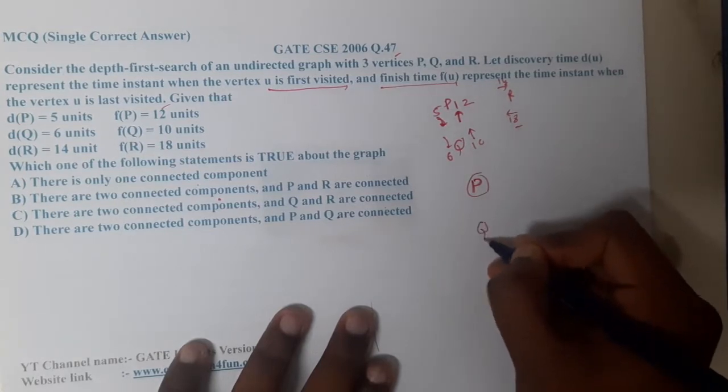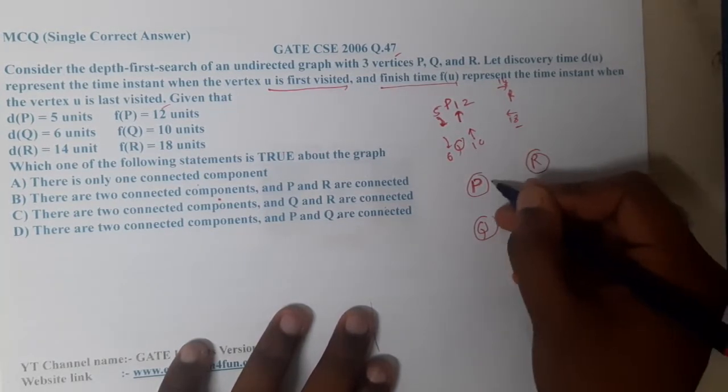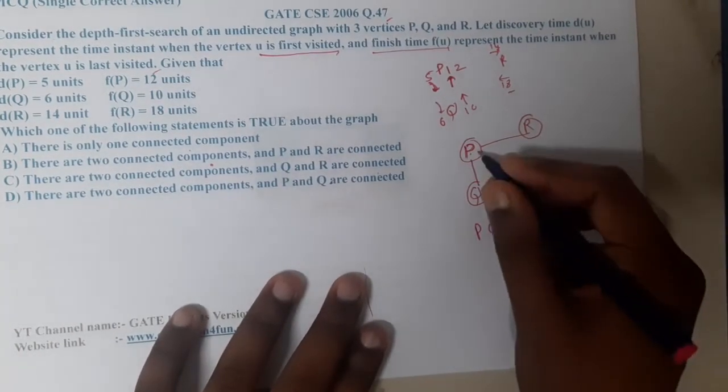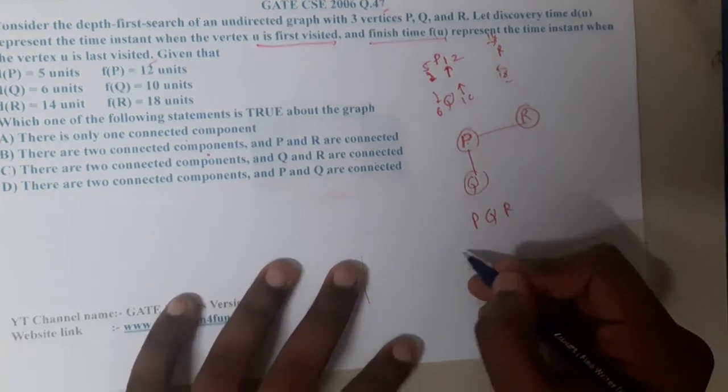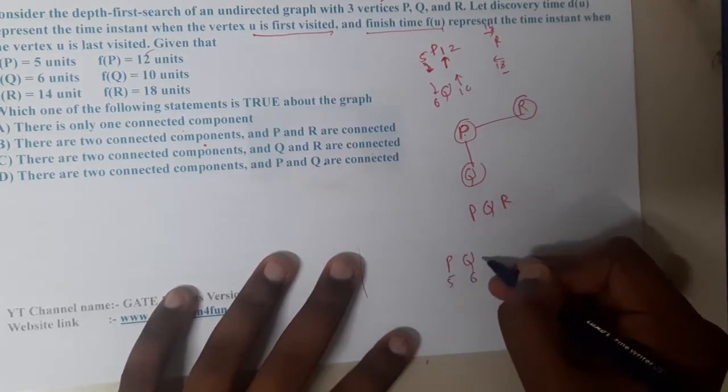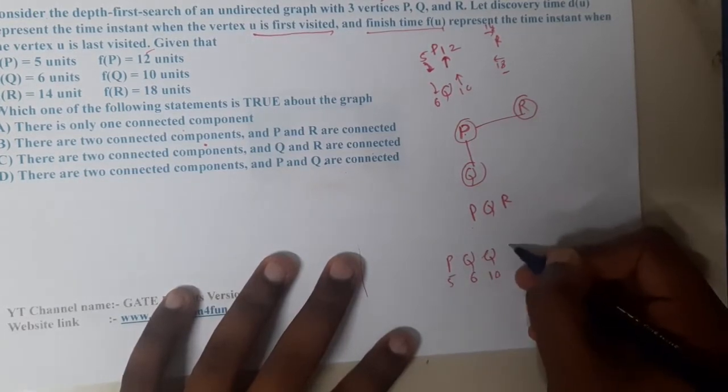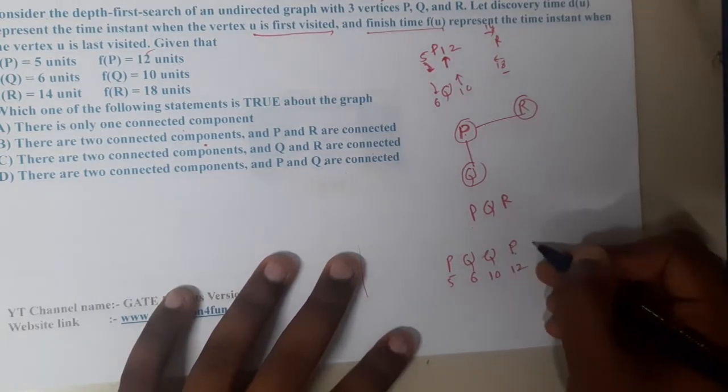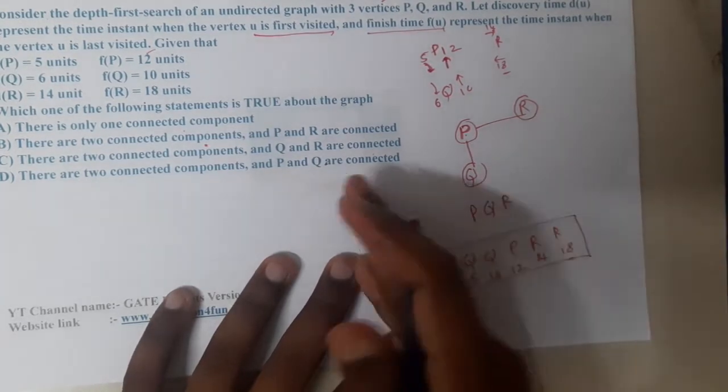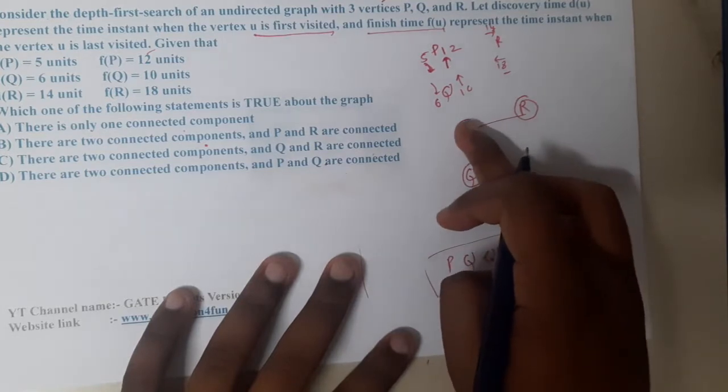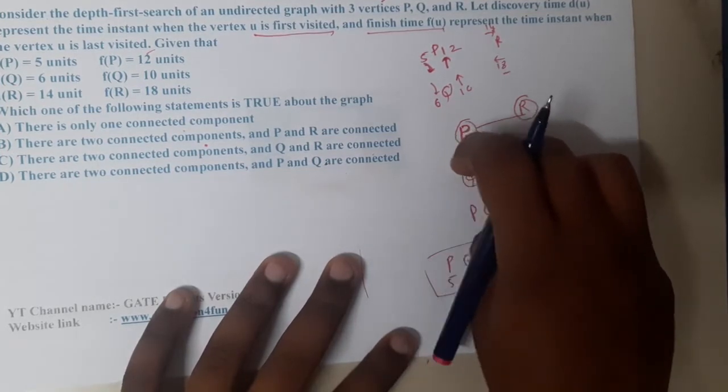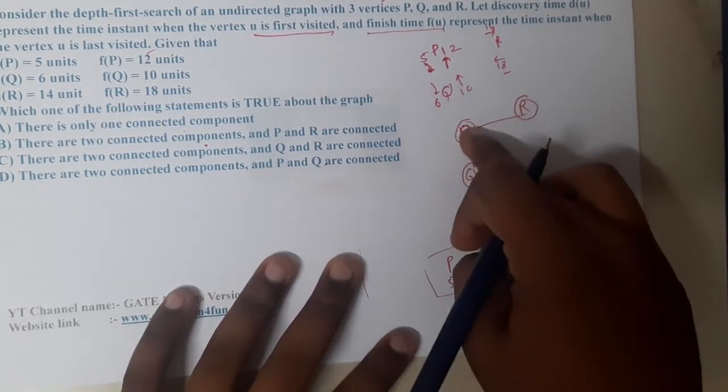If you draw a diagram, it will look this way: P, Q, R. This is the connection. First from P you went to Q, then you came reverse back and came to R. From P you started at 5 units, reached Q at 6 units, waited at Q until 10 units, and from Q you returned back to P at 12 units. You went to R at 14 units and stayed at R until 18 units. You started depth-first search, came here, waited for some time, checked whether there are any unvisited nodes adjacent to this. There are no nodes, so you came back and went here.